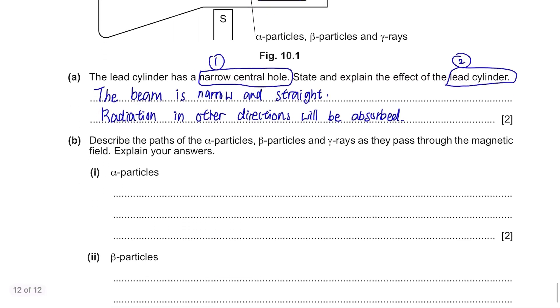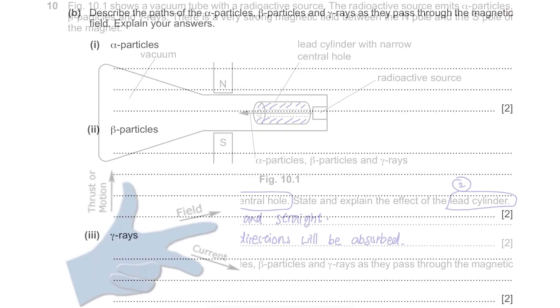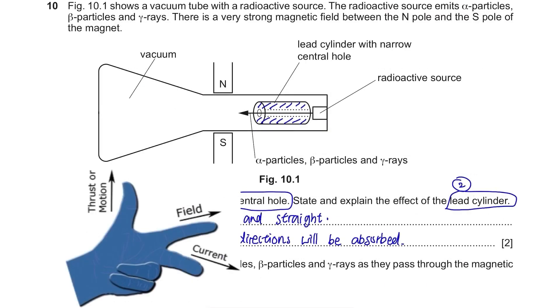Part B. Describe the paths of the alpha particles, beta particles and gamma rays as they pass through the magnetic field. Explain your answers. Alpha particles: if you use Fleming's left-hand rule, the direction of magnetic field is going down and the current is towards left, so the motion will be out of page towards you. Since alpha particles move in the direction of the current, they will also move out of the page.